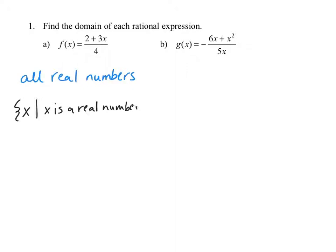Remember that the domain is a set of all the input values, using the acronym DIX where D is for domain, I is for inputs, and X is for the x values. The range is ROY — range is the output or the y values.